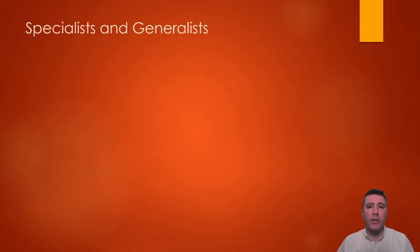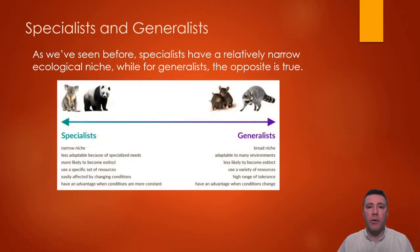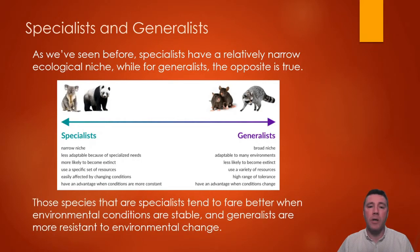Since we're now exploring more deeply the characteristics of individual species, this is a good time to have a reminder on something we've learned before regarding specialists and generalists. Specialist species have a relatively narrow niche and set of conditions under which they can survive, making them more susceptible to the adverse effects of environmental change. Generalist species are much more flexible due to their wider ecological niche and can withstand environmental changes much more effectively.